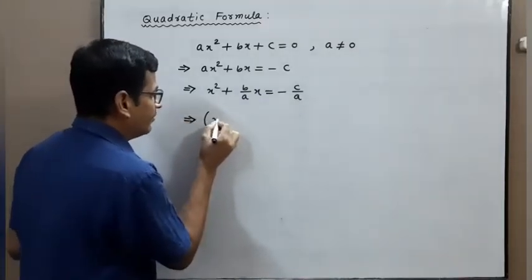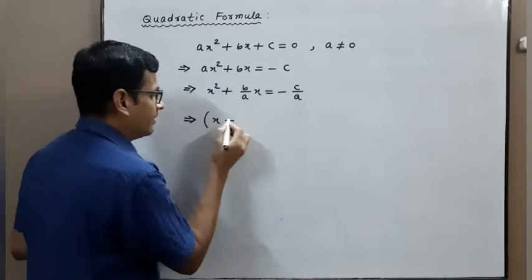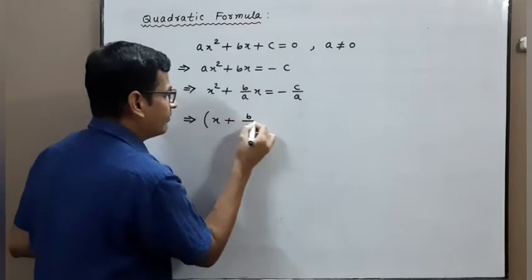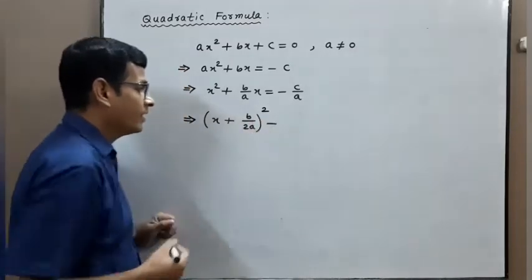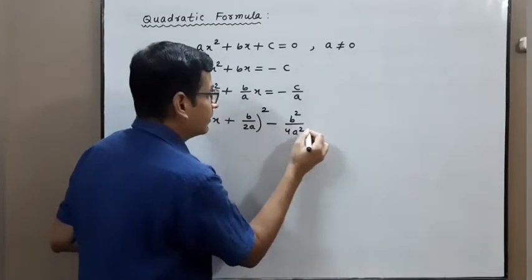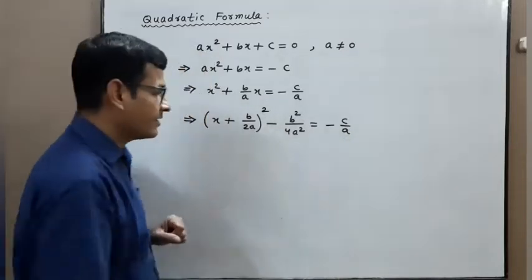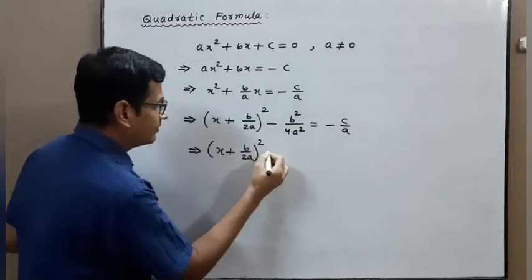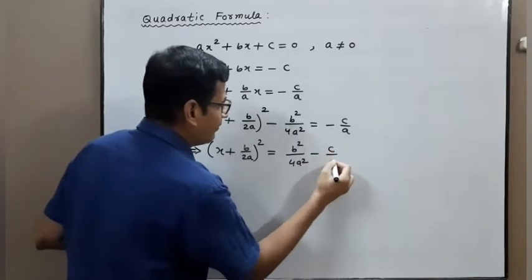For completing the square, we take the first element as x and write half of the coefficient of x. That is b upon 2a, whole squared, minus the square of that same term. So b squared upon 4a squared is equal to minus c upon a. Then x plus b upon 2a, whole squared, equals b squared upon 4a squared minus c upon a.